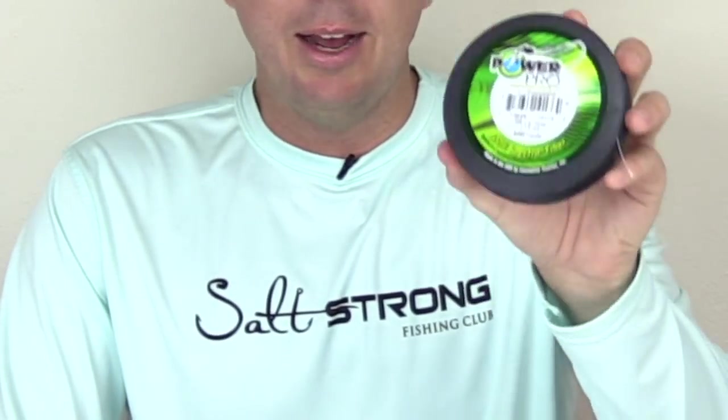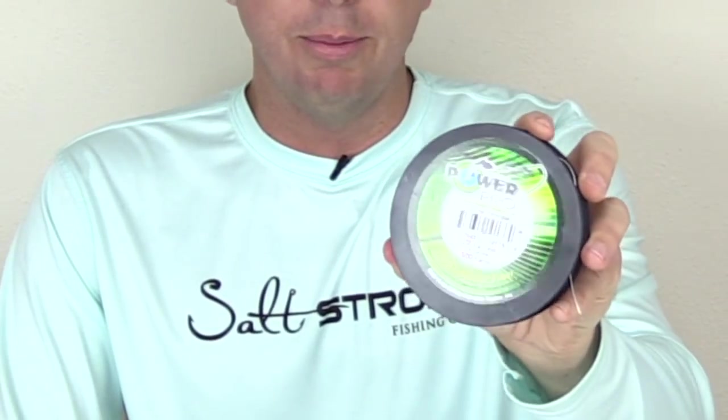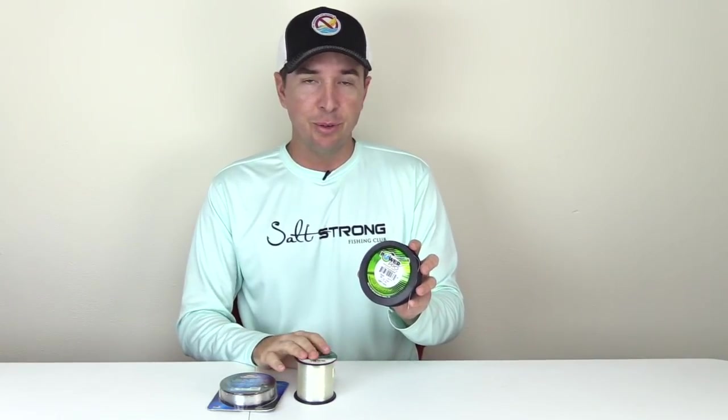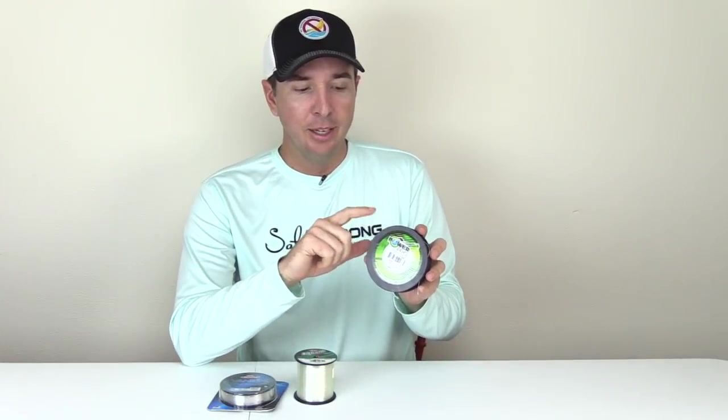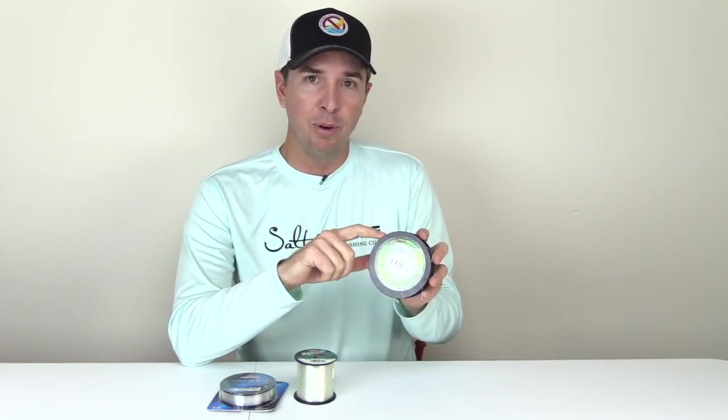For the braid we have Power Pro, this is traditional Power Pro. Just like most knots that were designed for traditional monofilament line, there's usually some adjustments you need to make for braid. I'll put a link down below where you can see the best knots that we've found so far for each of these different line types.